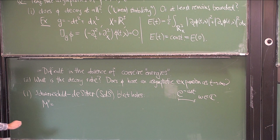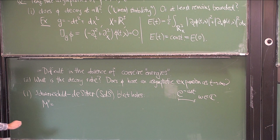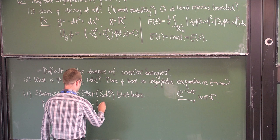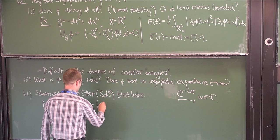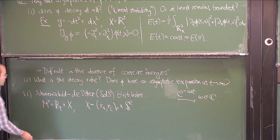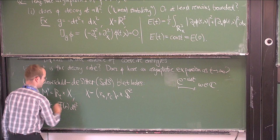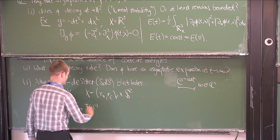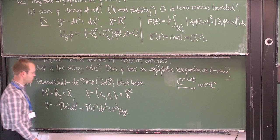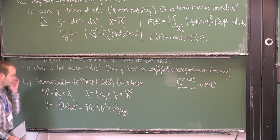Here, M will be essentially equal to time cross space, where space is a subset of R³ with some radius R+ and some other radius R_C, together with the two-sphere. The metric can be written down explicitly in a very simple form: minus F(r) dt² + (1/F(r)) dr² + r² times the standard metric on S².